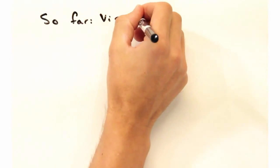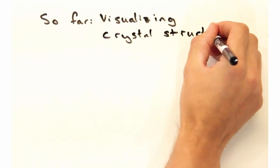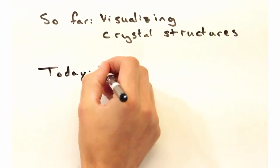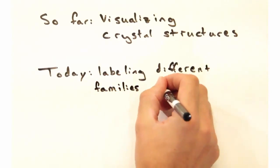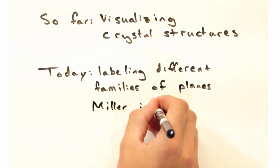So far we've talked about different ways of visualizing crystal structures, but now we want to develop a way to label different families of planes. We'll call the labeling notation Miller indices.